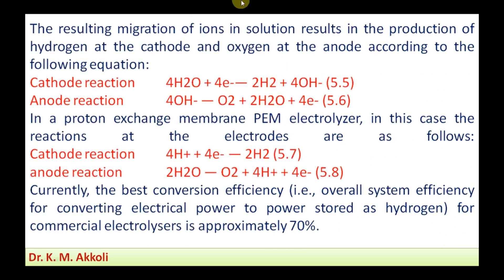The migration of ions in the solution results in the production of hydrogen at the cathode and oxygen at the anode. The cathode reaction is: four molecules of water combine with four electrons to form two molecules of hydrogen. At the anode, oxygen is formed along with two molecules of water and four electrons. These are the reactions taking place at the cathode and anode during the electrolysis process after supplying electricity.